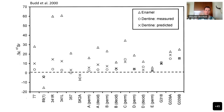Similarly, in the study by Buttedal from 2000, the triangles are the enamel and the circles are the dentine. Again, regardless of whether the enamel shows higher or lower strontium isotope ratios compared to the local signal, the dentine is much closer to the local range and has clearly been affected by diagenesis.